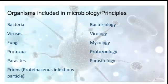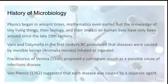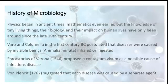The history of microbiology begins in ancient times. In ancient times, people believed diseases were caused by evil spirits. Later, Varro and Columella in the first century BC postulated that diseases are caused by invisible beings called animalia minutia. Fracastorius of Verona in 1546 proposed that contagium vivum is a possible cause of infectious diseases. Von Plenciz in 1762 suggested that each disease is caused by a separate agent.